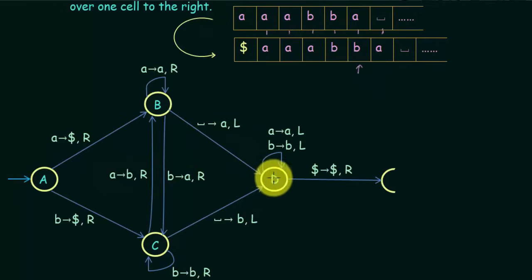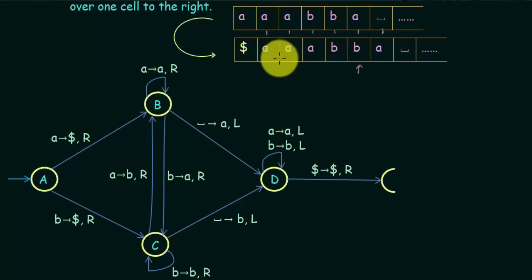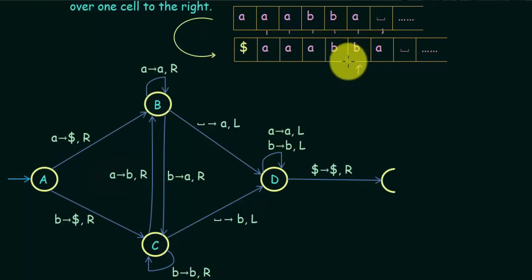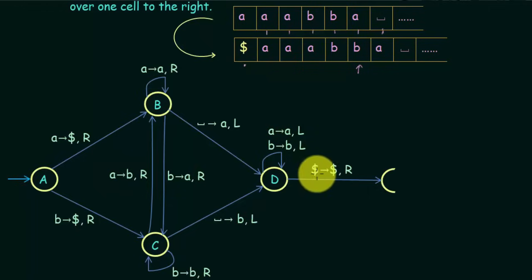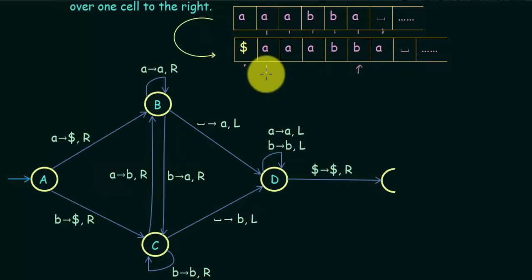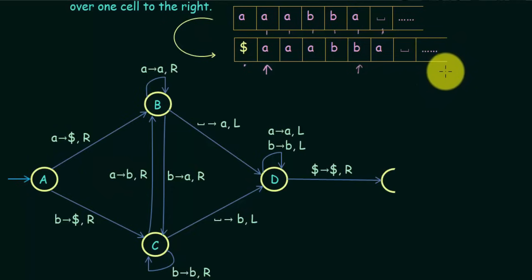We then enter state D. In state D, whether you encounter A or B, replace A with A itself and B with B itself, and keep moving to the left — essentially just scanning left without overwriting. Continue moving left until you encounter the dollar symbol. Upon encountering the dollar symbol, replace it with dollar itself and move one step to the right — the tape head is now positioned over the leftmost input symbol, ready for the rest of the computation.